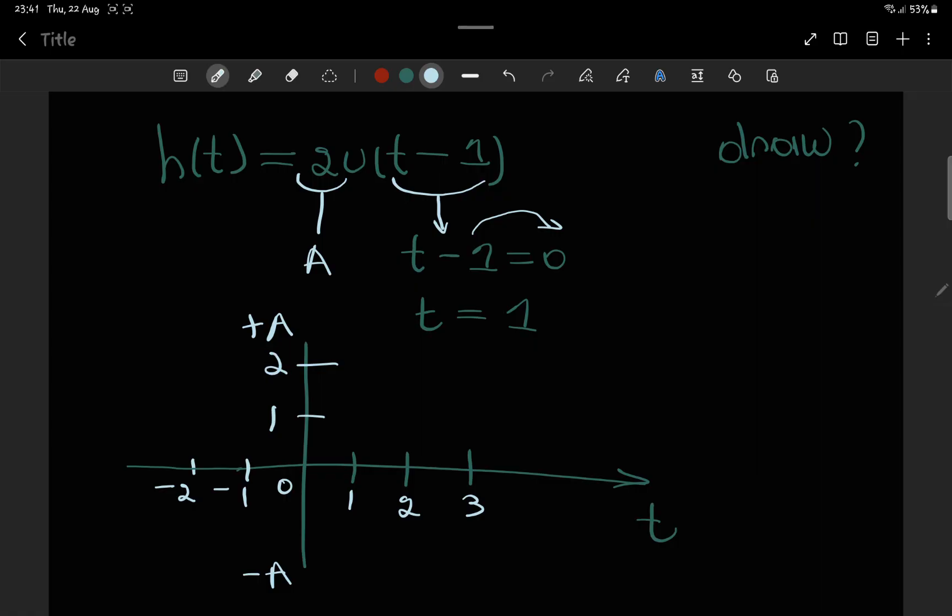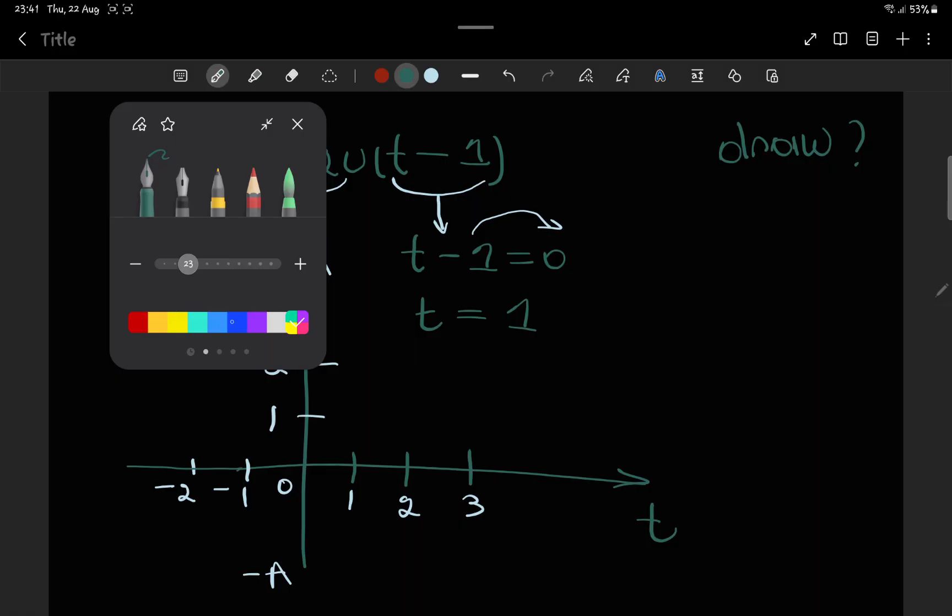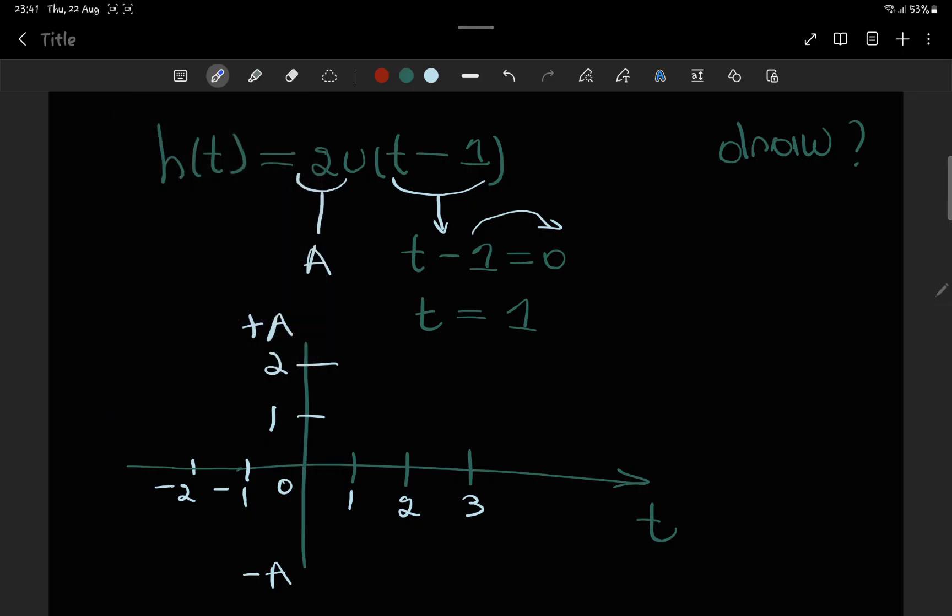So we need to draw this graph. Okay, so what is the value of t? t equals 1, so it's going to be somewhere here. What's the value of the amplitude? The amplitude is equal to 2.